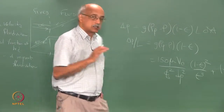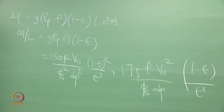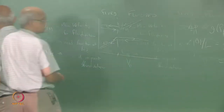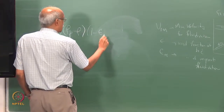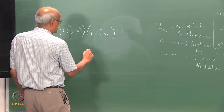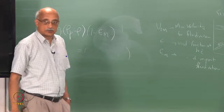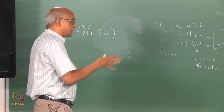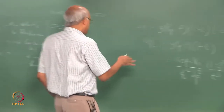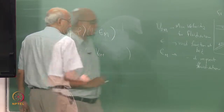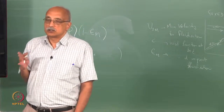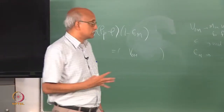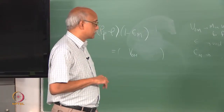At the incipient fluidization condition you equate these two expressions: g times (rho_p minus rho) times (1 minus epsilon_m) equals the Ergun right-hand side, substituting V0-m for V0 and epsilon-m for epsilon. This gives a quadratic equation for the superficial velocity at which fluidization begins.